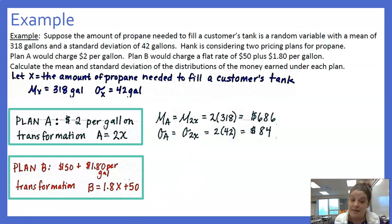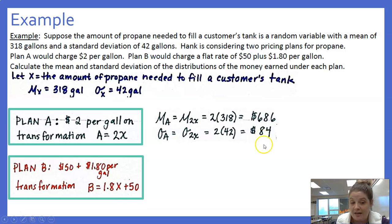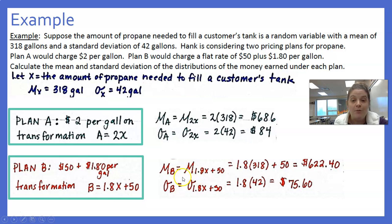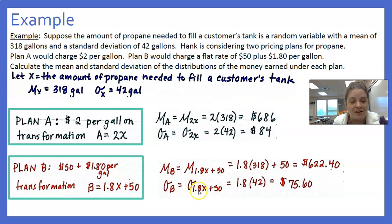For Plan A: the mean of A = 2 × 318 = $636, and the standard deviation of A = 2 × 42 = $84. For Plan B: the mean of B = 1.8 × 318 + 50 = $622.40, and the standard deviation of B = 1.8 × 42 = $75.60. The plus 50 is just a shift and does not affect the spread; only the multiplier 1.8 affects the standard deviation.